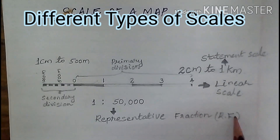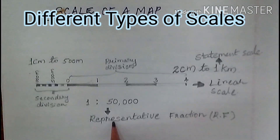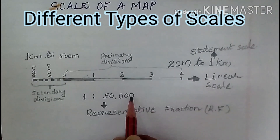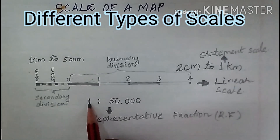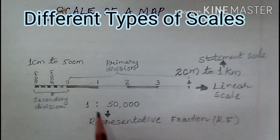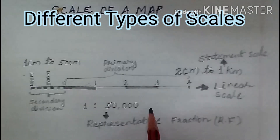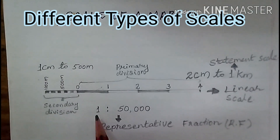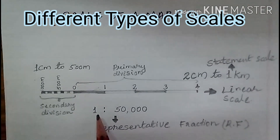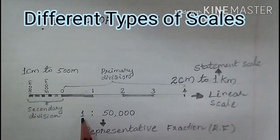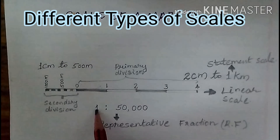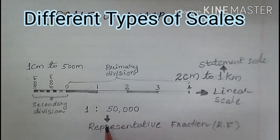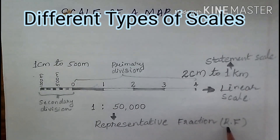In the representative fraction, the scale is given in digits — that means in a ratio form, 1 is to 50,000. That means 1 cm of the map is equal to 50,000 cm on the earth's surface. Here no unit is mentioned, because of that we can use any unit of measurement. If we are taking cm as the unit, 1 cm is equal to 50,000 cm. That is the meaning of the representative fraction or RF method.